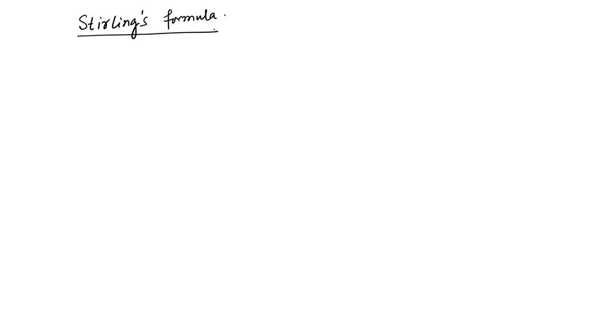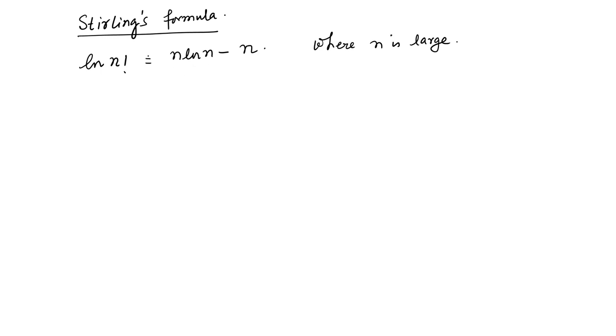Before going to the next problem, let us do Stirling's formula, which is needed repeatedly in statistical mechanics. The result states that log(N!) ≈ N log N − N, where N is large. This means the factorial of a large number can be approximated by this simple expression, replacing the factorial entirely.